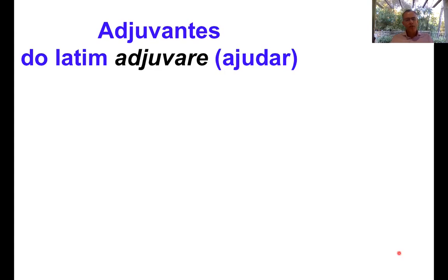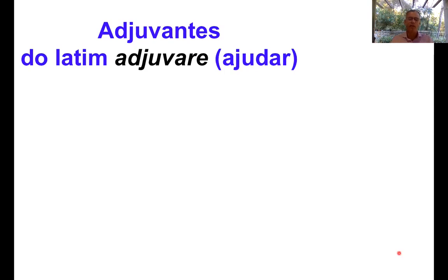Para terminar esse vídeo, gostaria de falar rapidamente que nas vacinas, além desses antígenos — sejam eles moléculas purificadas ou micro-organismos mortos — existe a presença de outra substância chamada de adjuvantes. Os adjuvantes estão presentes em quase todas as vacinas; eles não estão presentes nas vacinas atenuadas, mas em todos os outros tipos vacinais. O adjuvante é uma molécula que vai ajudar e exacerbar a resposta imune. Além disso, alguns deles têm a propriedade de reter o antígeno, fazendo com que ele seja lentamente liberado para a apresentação ao sistema imune.